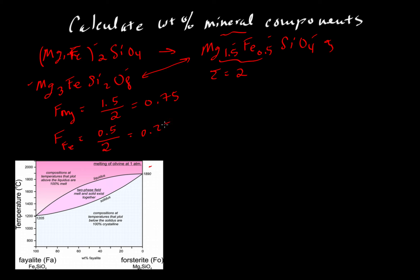That comes out to 0.25. If we write the pure Mg fellow as Mg₂SiO₄, this equals forsterite. And Fe₂SiO₄ is the mineral fayalite.